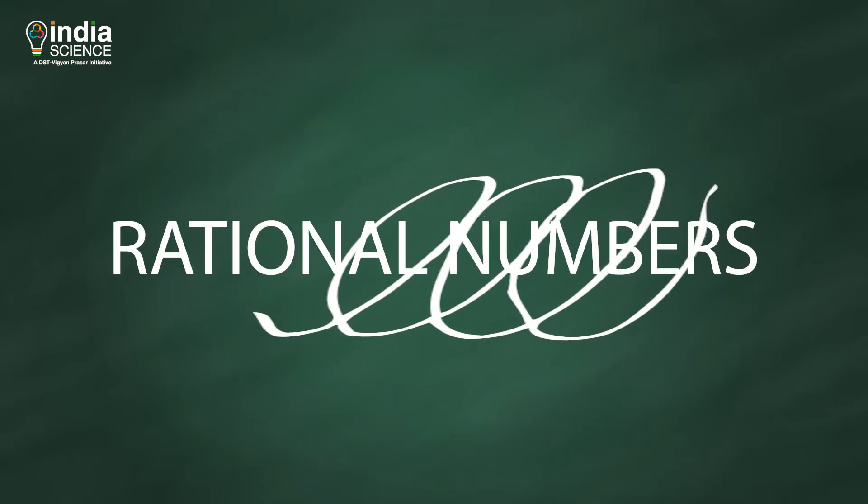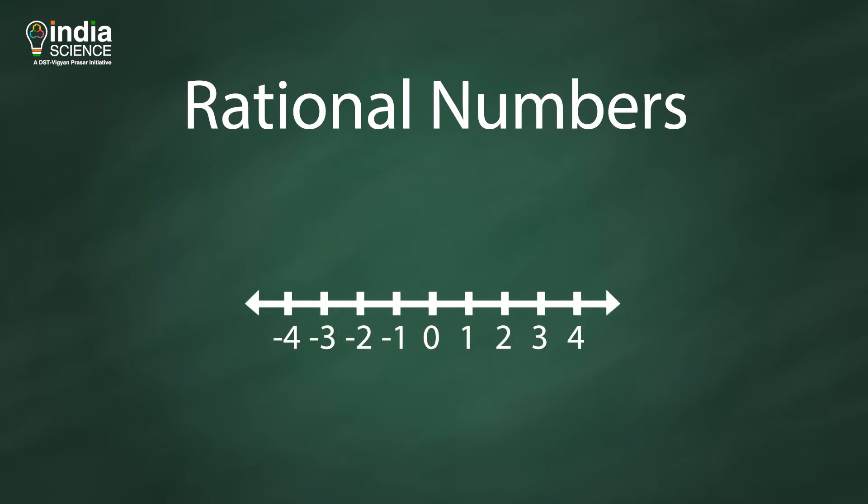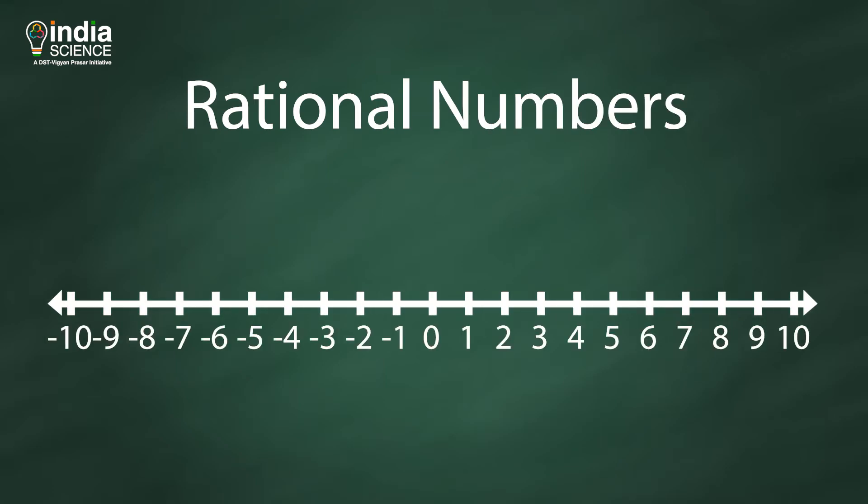So now, let's go to the larger numbers, rational numbers. Rational numbers are the numbers which can be expressed as a ratio, for example, 1 by 3 or minus 108 by 1, and between two integers, there are infinitely many fractions.